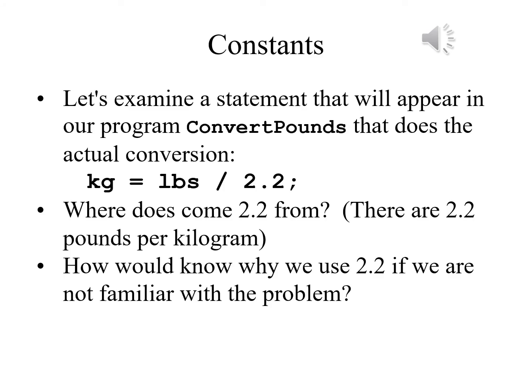Let's examine a statement from a program to convert from pounds to kilograms: kg equals lbs divided by 2.2. Dividing pounds by 2.2 gives us the number of kilograms, because there are 2.2 pounds per kilogram, so that division does the conversion for us.